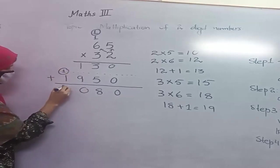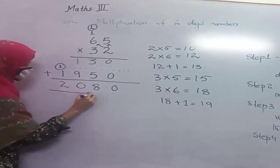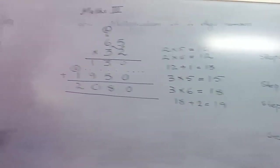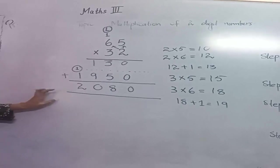1 and 1 equals 2. The answer of 2-digit multiplication is 2080.